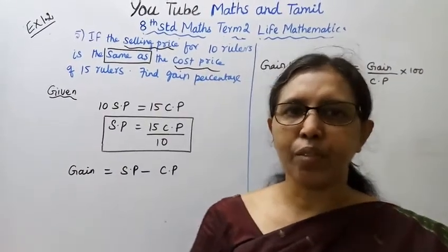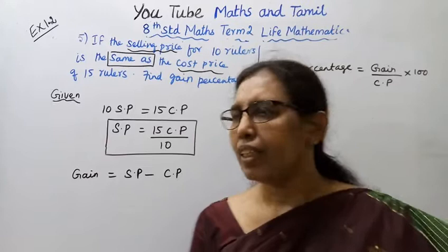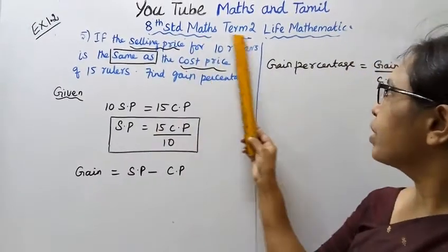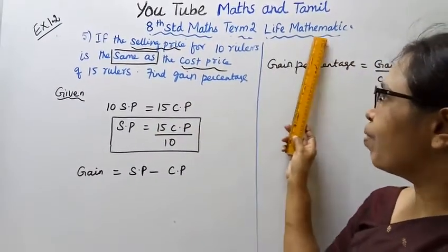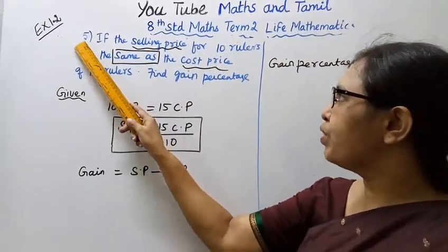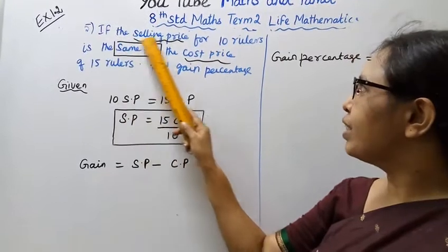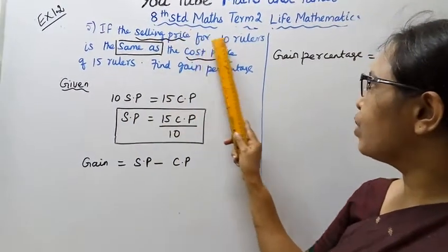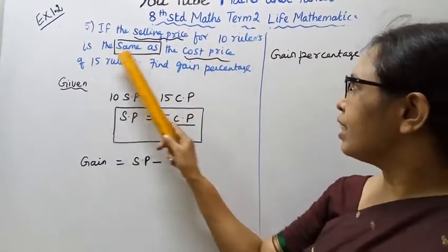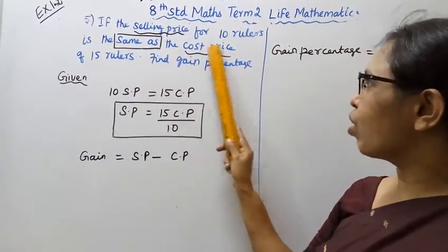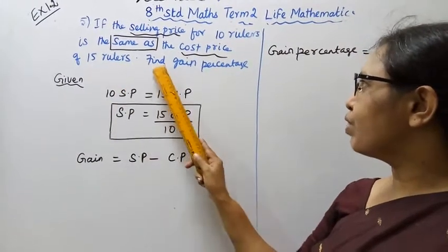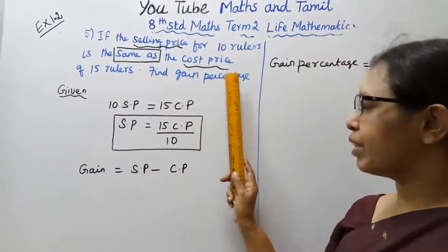Hello students, welcome to Mags and Tamil channel. Age standard Mags, turn to life mathematics exercise 1.25. If the selling price for 10 rulers is the same as the cost price of 15 rulers, find the gain percentage.